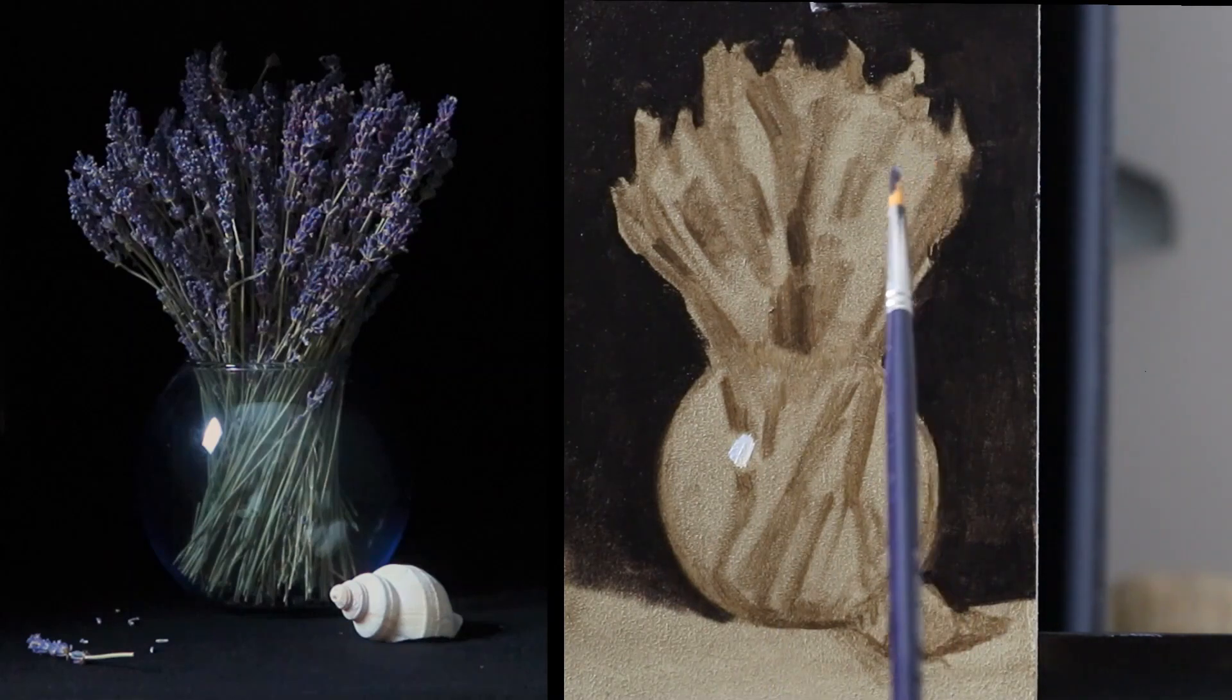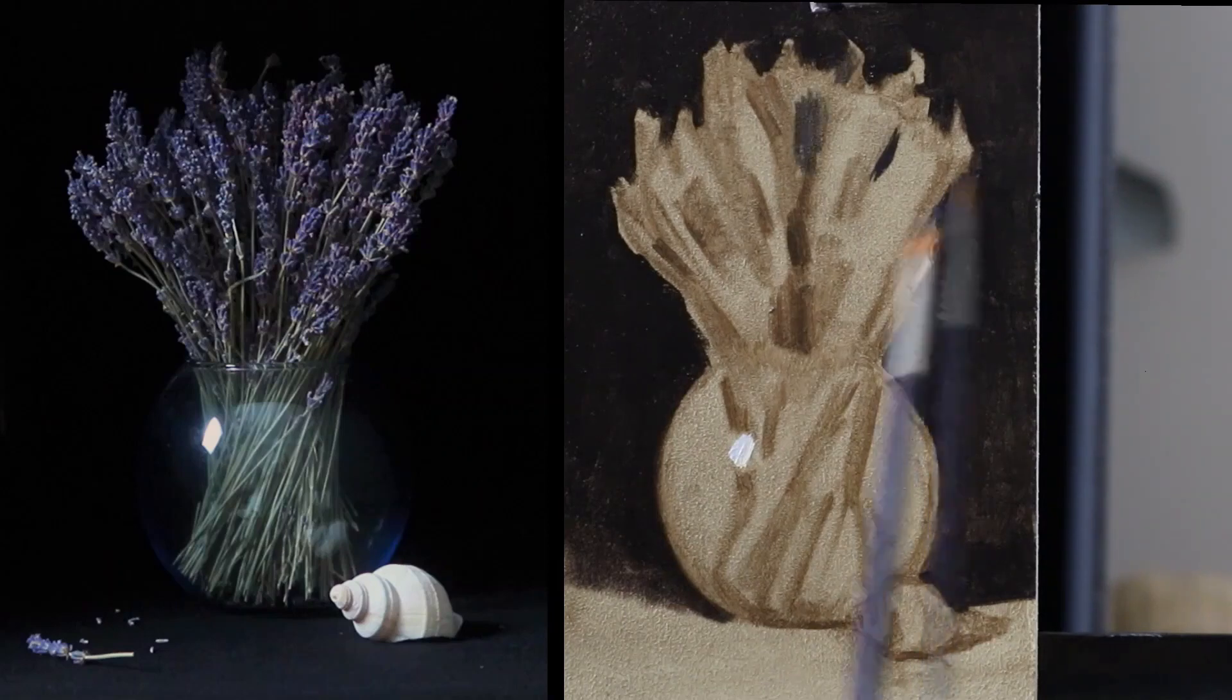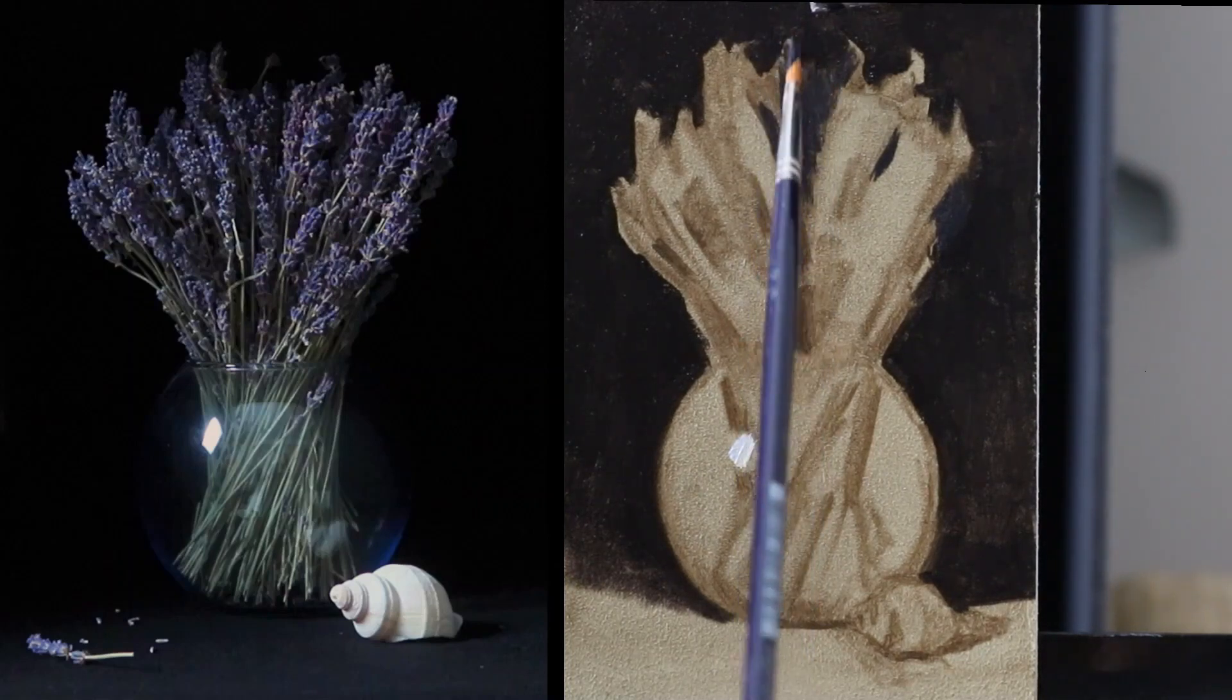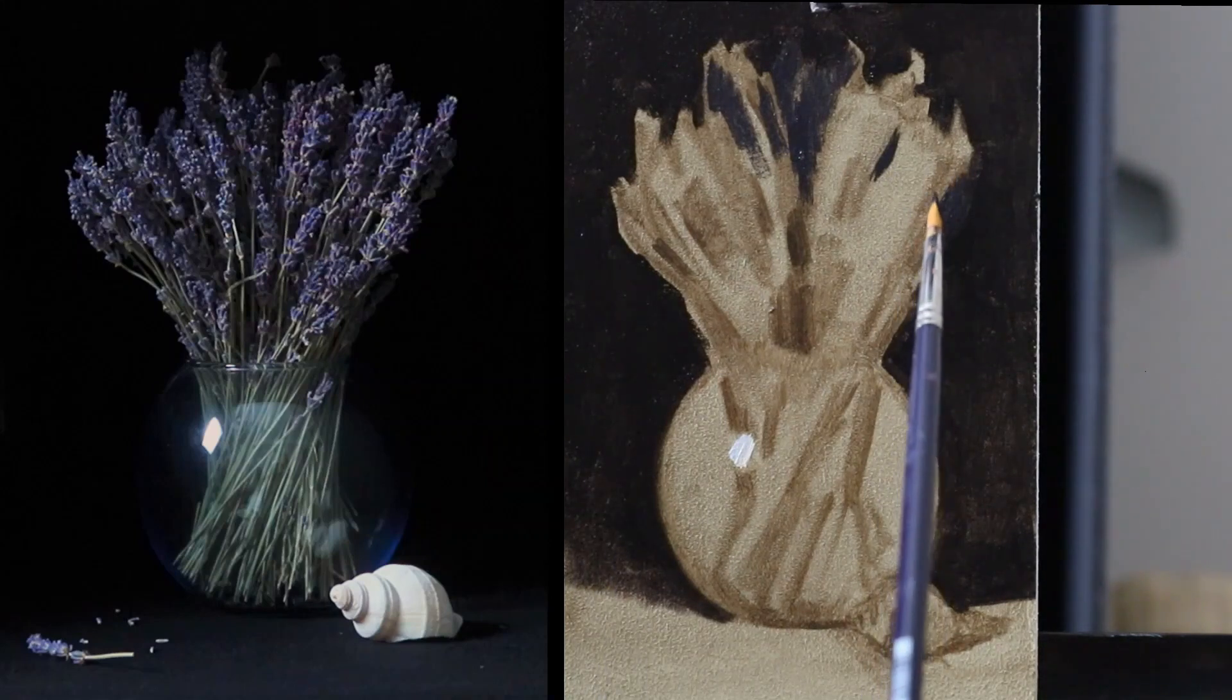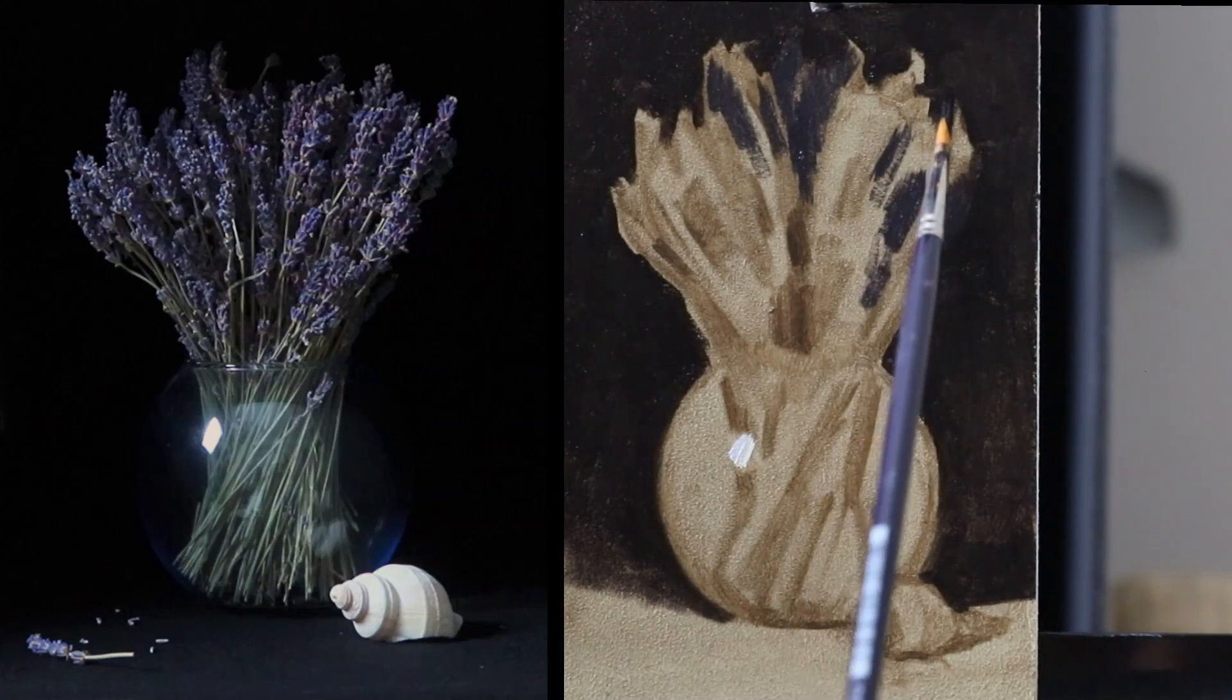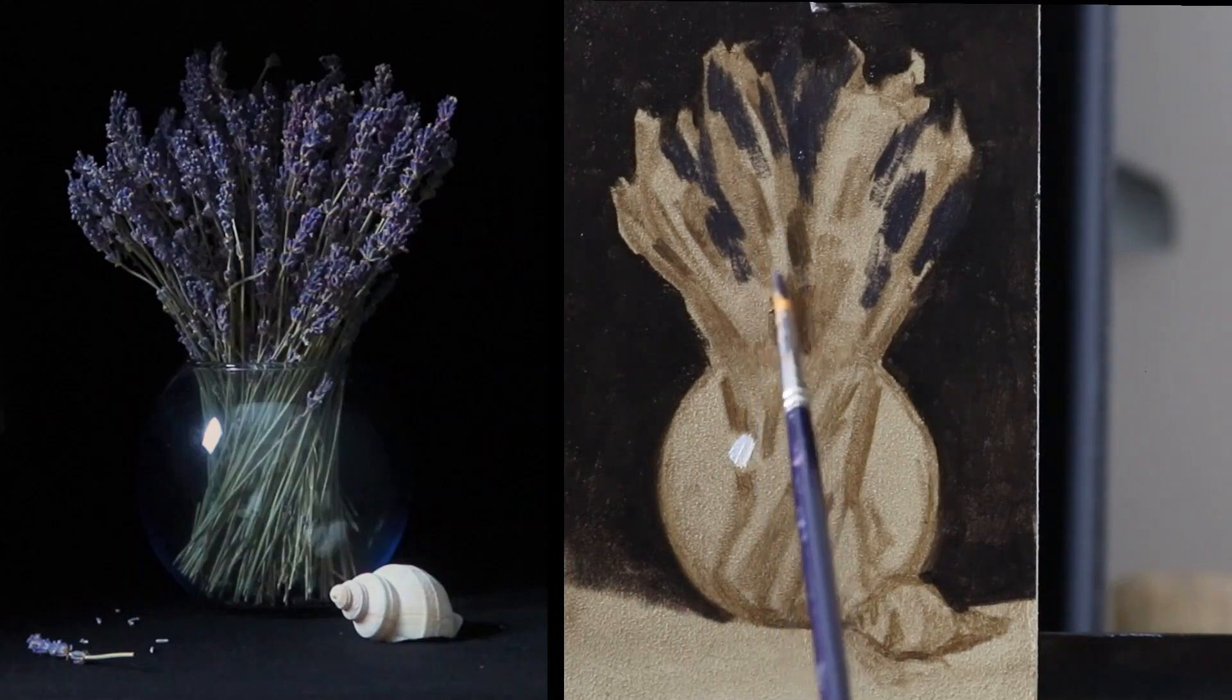The next value I will apply is the darkest value of the lavender flowers. This is because it's important that this value works in relationship to the background and to the brighter areas of the lavender flowers. It needs to be dark enough to turn the form of the flowers back into space to create atmosphere along the contour line but not too dark because then it will disappear. This is the moment where you see if your color mixes really work or if you have to make some small adjustments to them.